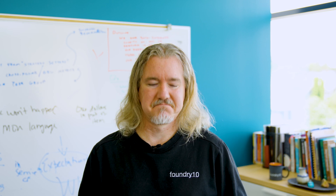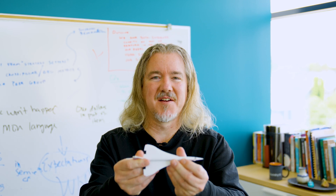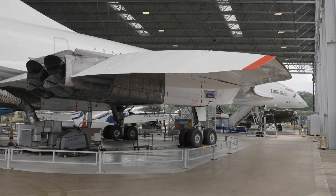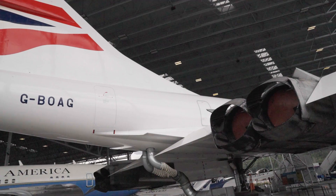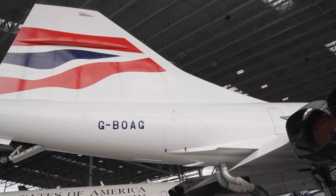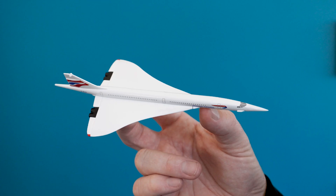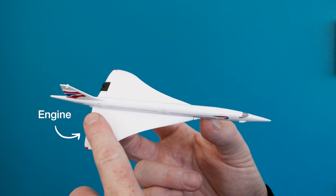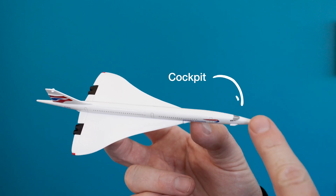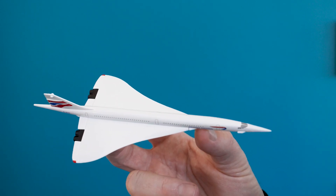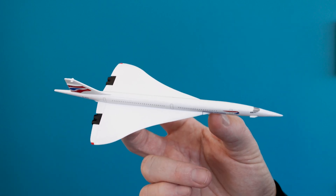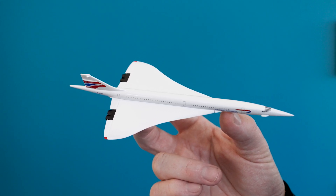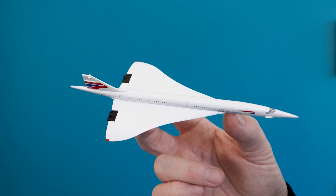Let's start with something familiar — a model plane, perhaps like this one right here. This model is a scaled-down, simplified version of a real Concorde jet. The model plane has scaled-down simplified parts of an actual Concorde jet, like the engine, wings, cockpit, and passenger area. You can even manipulate the control surfaces to see how they would move. Models like this are useful because we often don't have access to the real thing, and they allow us to explore and understand things like planes, or even social systems, in a tangible way.